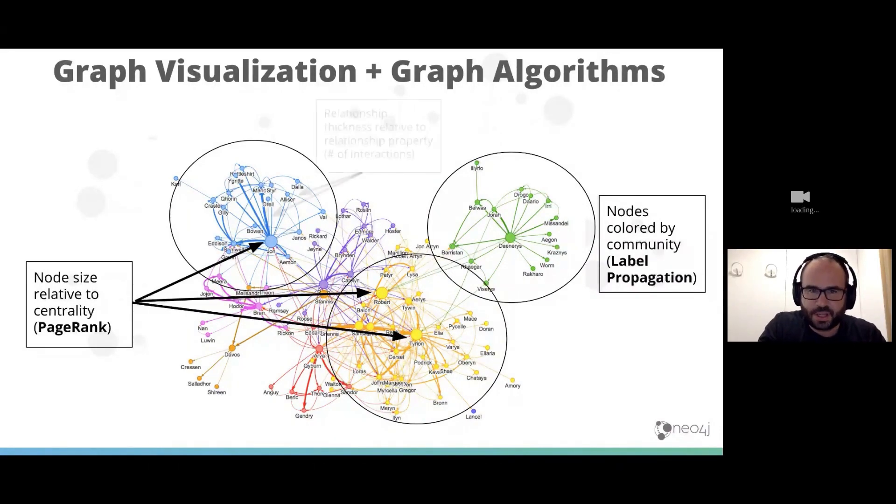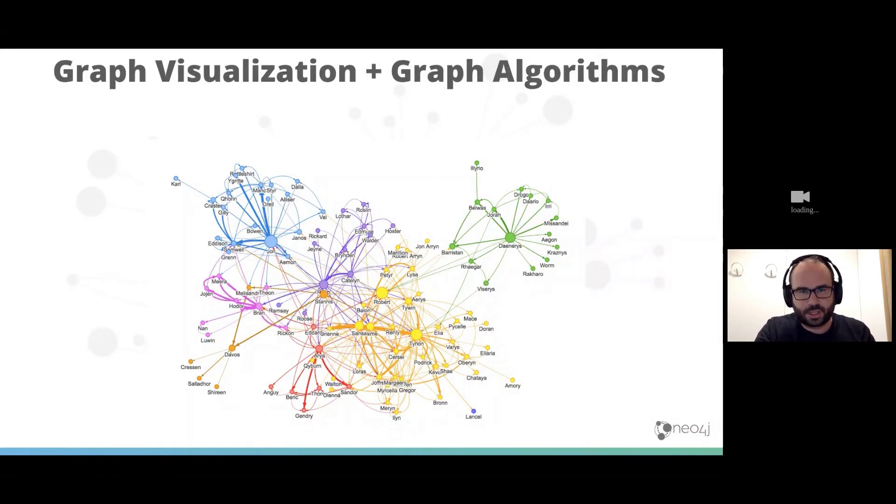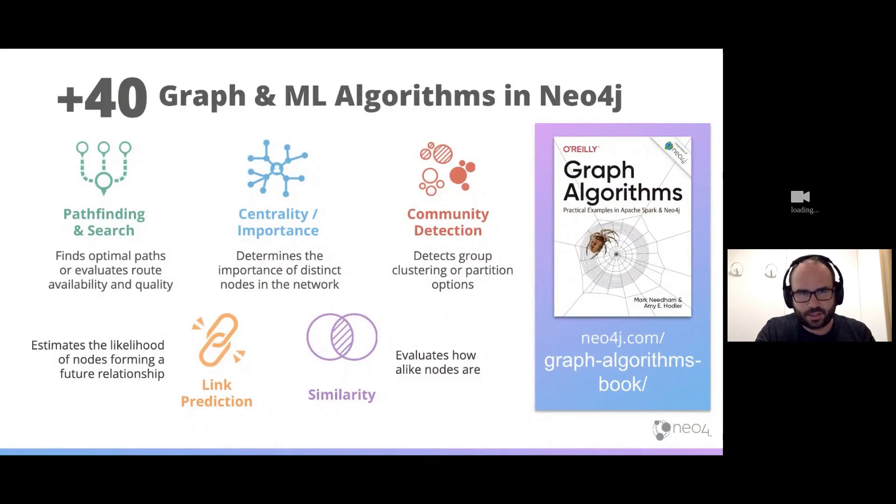And then our relationship thickness are styled relative to a relationship property or a weight on the relationship. In this case we're visualizing interactions among characters in Game of Thrones. So if two characters have had more interactions, we increase the thickness of that relationship. That's really neat because we can just look at this visualization and we can immediately start to infer some information and understanding. Just at a glance we can start to see who are the most important characters, who they're interacting with the most. We can start to understand what's going on in this world.